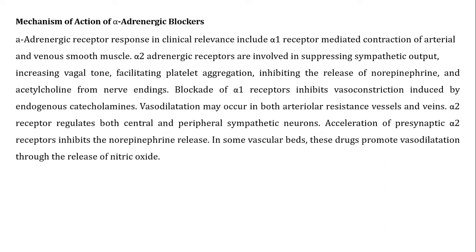Blockade of alpha-1 receptors inhibits vasoconstriction induced by endogenous catecholamines. Vasodilation may occur in both arterial resistance vessels and veins. Alpha-2 receptors regulate both central and peripheral sympathetic neurons. Activation of presynaptic alpha-2 receptors inhibits norepinephrine release. In some vascular beds, these drugs promote vasoconstriction through the release of nitric oxide.